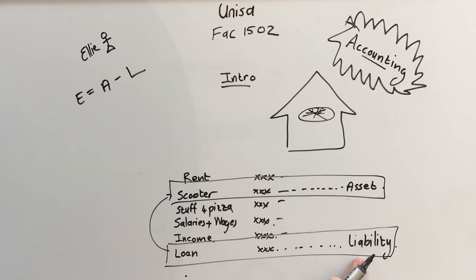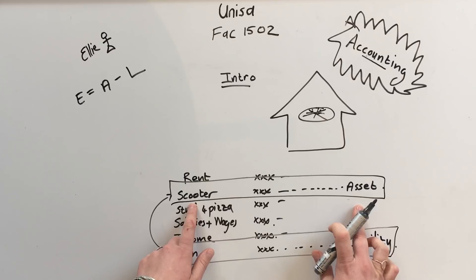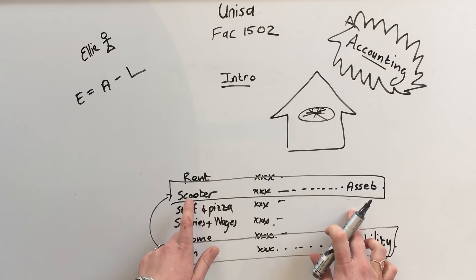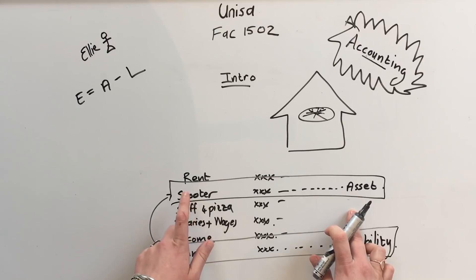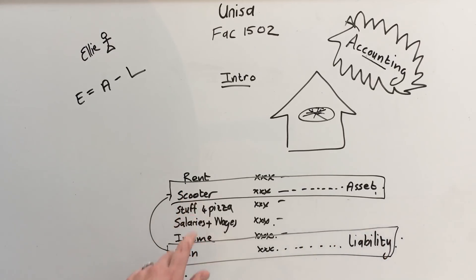A liability is something we are liable for — it's money we owe, like the loan. An asset is something we are going to use to make money. We bought the scooter to deliver the pizzas and we are going to use that asset to make money. So there we have assets and we have liabilities.